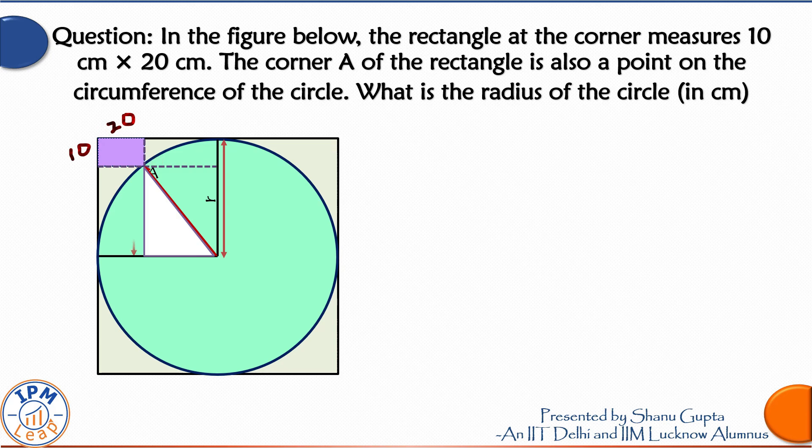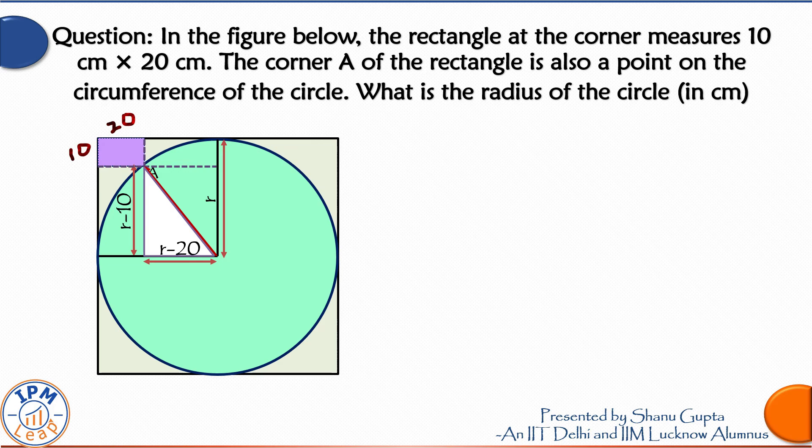Similarly, this horizontal line is equal to R, and from this if we subtract the length of the rectangle, which is 20, we get this side equal to R minus 20. And the longest side of this rectangle, the hypotenuse, we already know is equal to R.